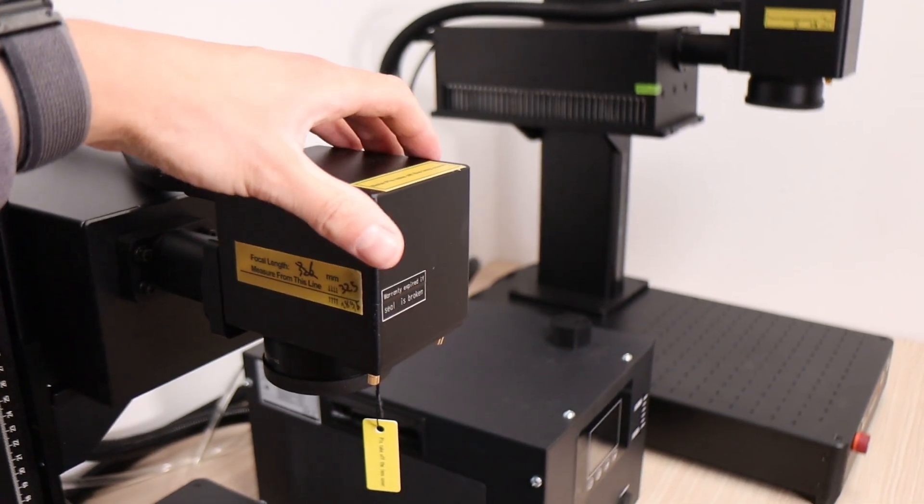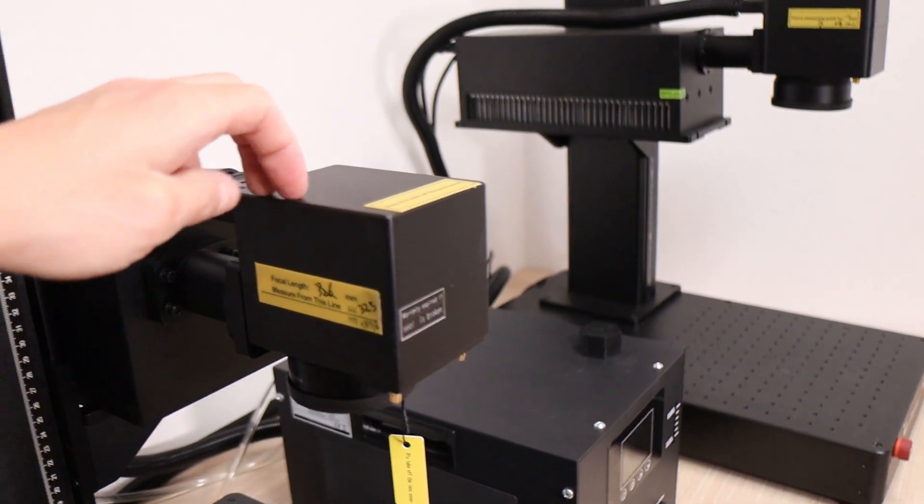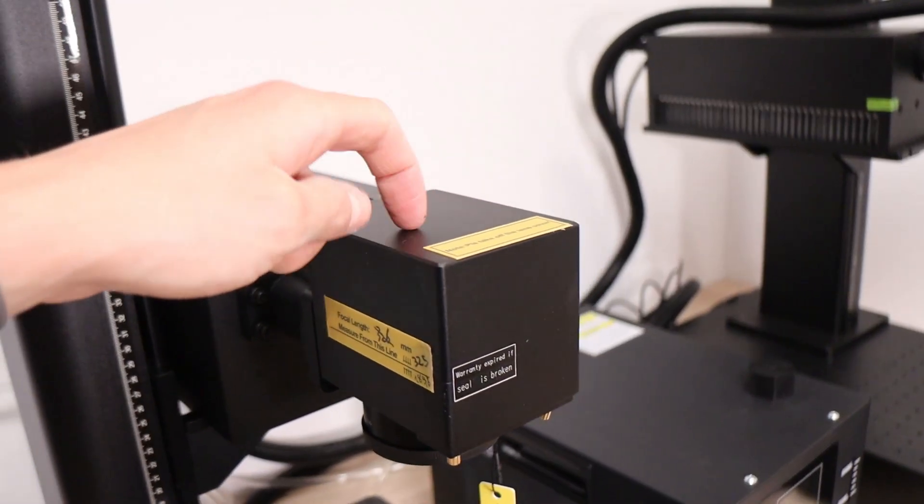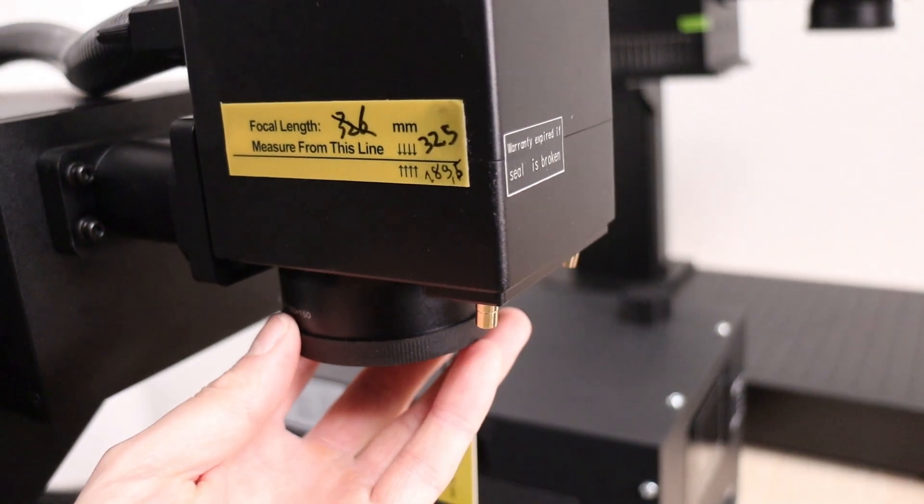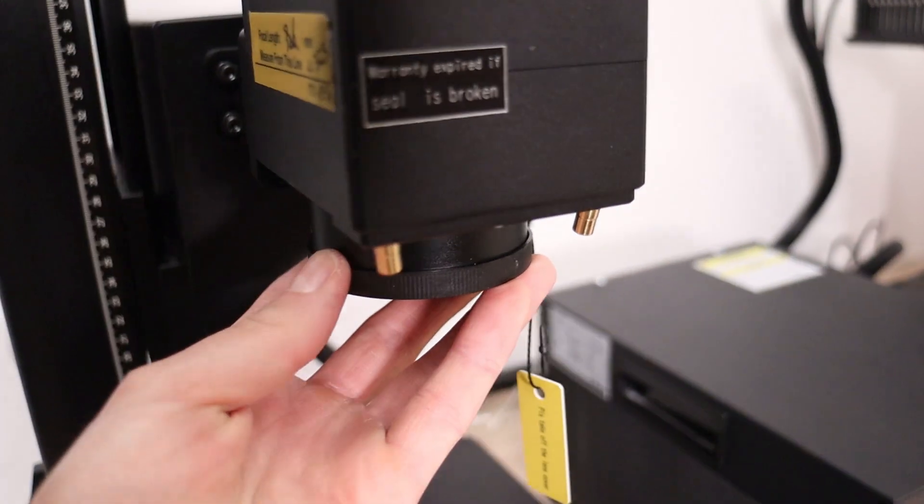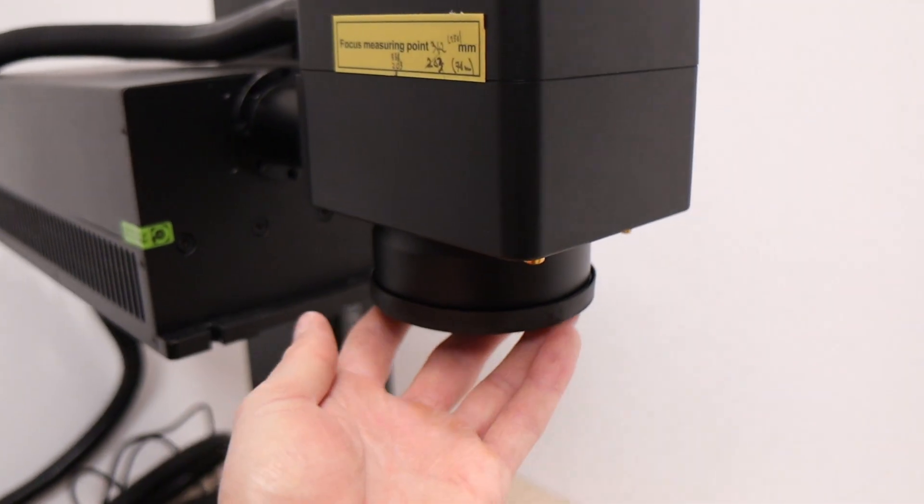Another key difference is that the 10-watt version features a smaller galvo head enclosed in a metal casing, whereas the 5-watt model uses a plastic cover. Additionally, the 10-watt machine uses a physically smaller lens size, meaning the lenses are not interchangeable between the two models.